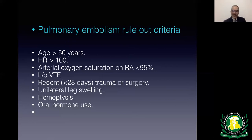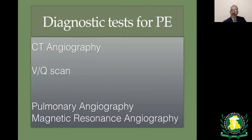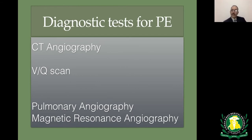If pre-test probability is intermediate, perform the D-dimer. If high, skip D-dimer and proceed directly to diagnostic imaging. The primary diagnostic test is CT pulmonary angiography, now considered near gold standard. Conventional pulmonary angiography is no longer used. MR angiography is not yet ready for clinical use. If the patient has acute renal failure or severe contrast allergy, a ventilation-perfusion scan is used instead.